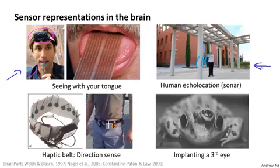Third example is the haptic belt, where if you have a strap around your waist, a ring of buzzers that always have the northmost one buzzing, you can give a human a direction sense similar to maybe how birds can sense where north is. And some bizarre example, but if you plug a third eye into a frog, the frog will learn to use that eye as well.